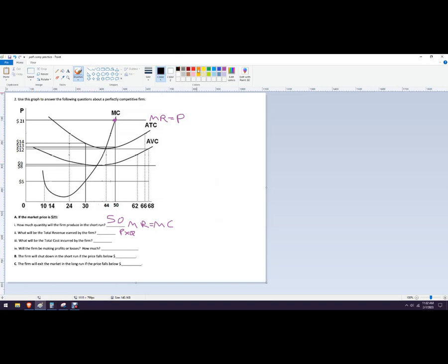And then total cost. This is going to be our average total cost times quantity. So quantity is 50, average total cost we're going to come down here to where it hits average total cost. That right there is 13, so it'd be 13 times 50 which is 650. That's our answer there.